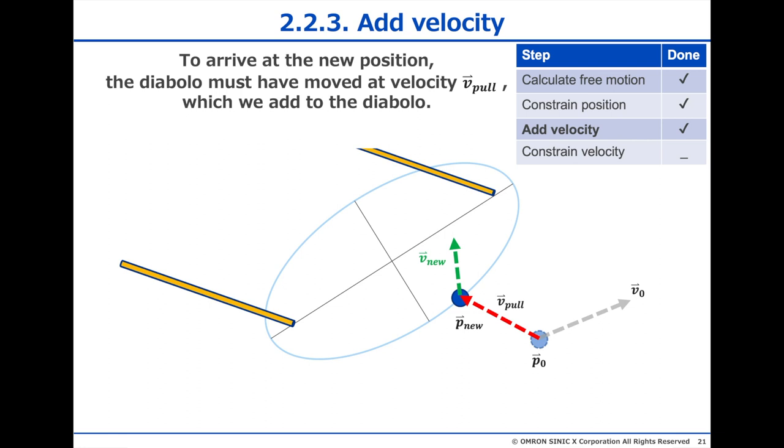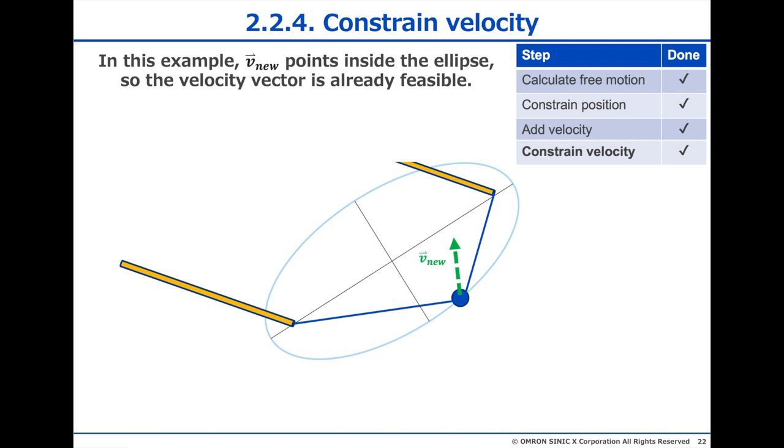Next, as the sticks moved, it transferred energy to the Diabolo, so we add a pull velocity to the Diabolo velocity vector. Then, in the next step, we would limit the velocity as before, but in this example, the velocity vector is already pointing into the ellipse, so we do nothing. And that's the end of the time step, and we're done.